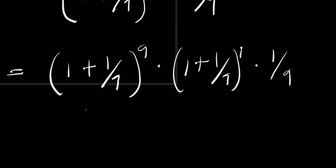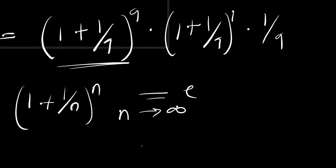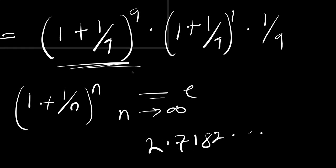Now, (1 + 1/9)^9 is in the form of (1 + 1/n)^n. As n approaches infinity, the value of this expression approaches e — that is Euler's formula — and the value of e is approximately 2.7182. So this value is obviously less than 3.